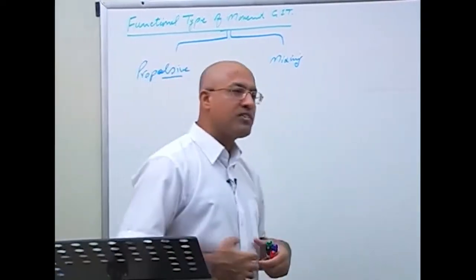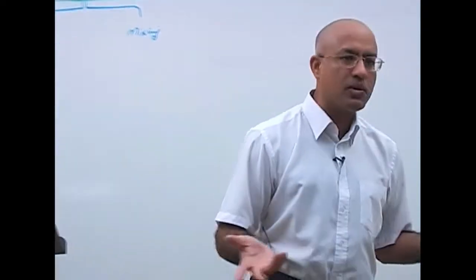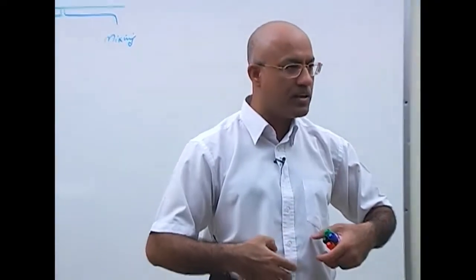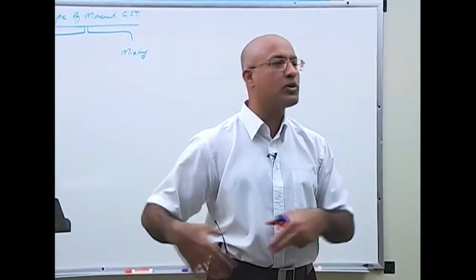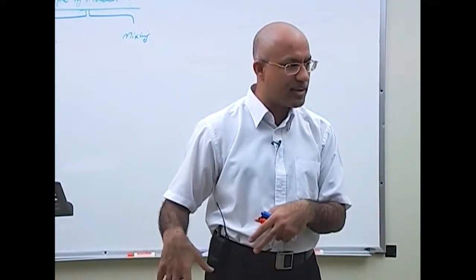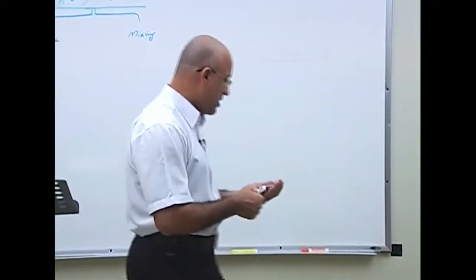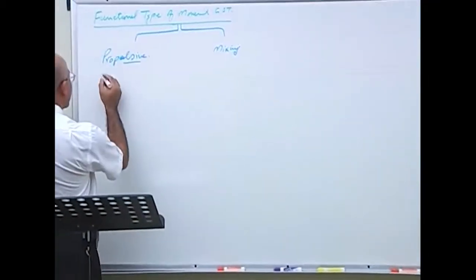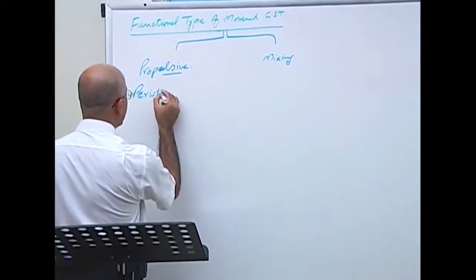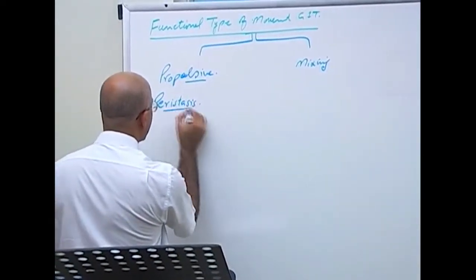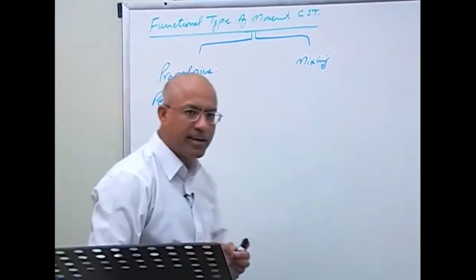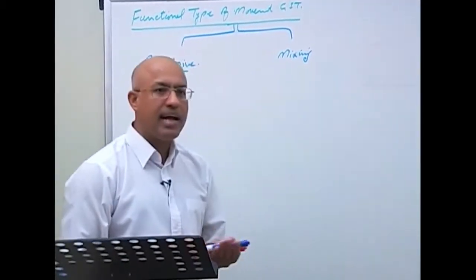The purpose of propulsive movement in the gastrointestinal system is to move the contents of the lumen from one point to the next, usually from the oral side to the anal side. Propulsive movements are also called peristalsis.